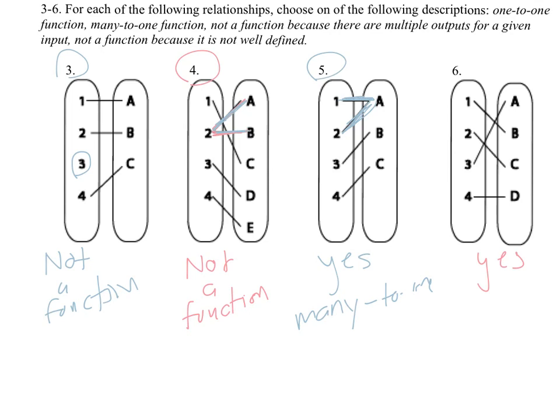And here we look, do any of the outputs basically have two different inputs that result in that? No. So this is one-to-one. And those are really the four types of examples you can see on is it a function and is it many-to-one or one-to-one.